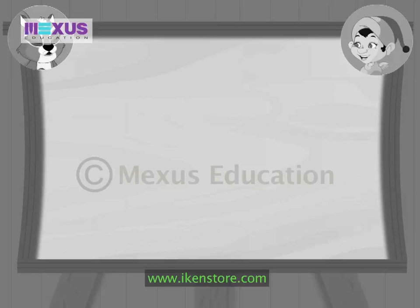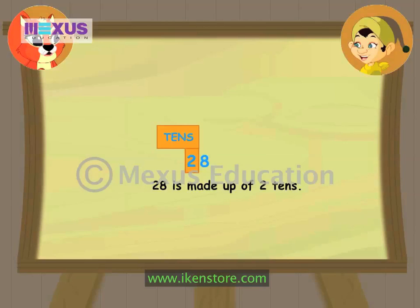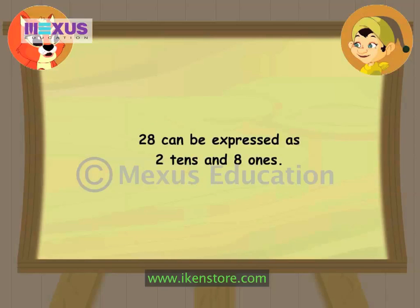The number on the left-hand side gives the number of tens. In 28, 2 is on the left-hand side, so we say that 2 is in the tens place. In other words, 28 is made up of 2 tens. Now Amber, put together all this information and tell me how we can express 28 in tens and ones. 28 can be expressed as 2 tens and 8 ones. It can also be written as 20 plus 8.